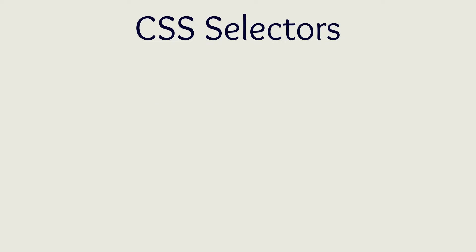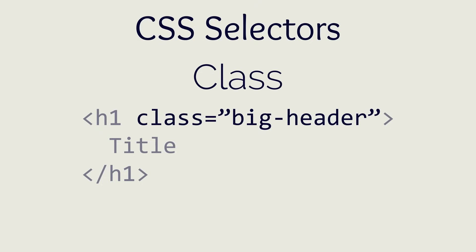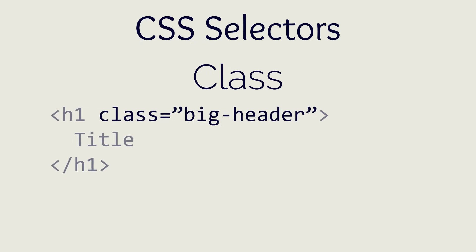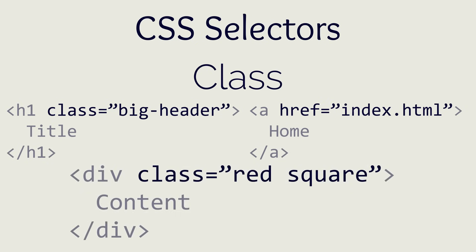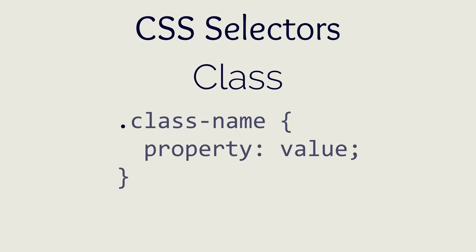By far the most common and useful selector is the class selector. The class selector lets you select HTML elements based on their class attribute. All HTML elements can have attributes assigned to them, such as the href for an anchor tag. A class is just an attribute that all HTML elements can have and is used with CSS to distinguish elements for specific styling. The class attribute can also have multiple different classes in the same attribute, as long as they're separated by a space. In order to select an element by class, we need to use a period before the class name as the CSS selector. This period tells CSS that whatever follows is a class name and not an HTML element name.